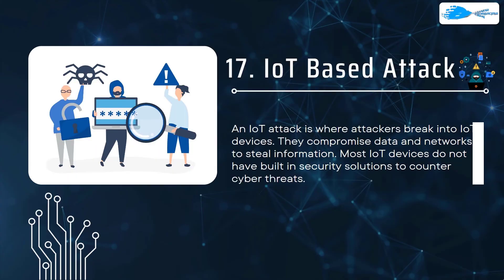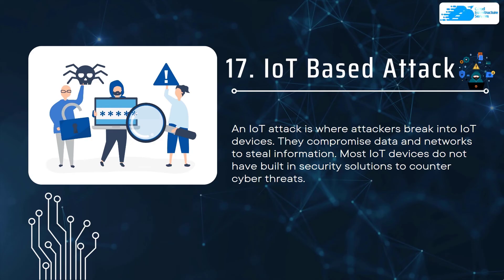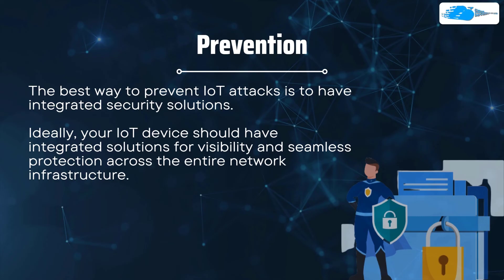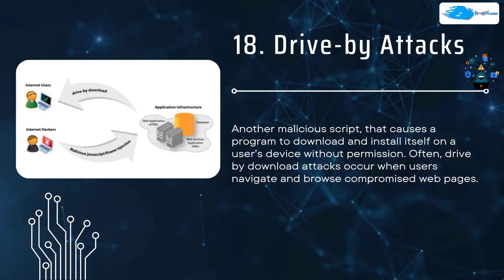Number seventeen is IoT-based attacks. An attacker breaks into Internet of Things devices, compromises data and networks, and steals information. Most IoT devices do not have built-in security solutions. The best solution is to have an integrated security solution installed on your IoT device that provides visibility and seamless protection across the entire network infrastructure.